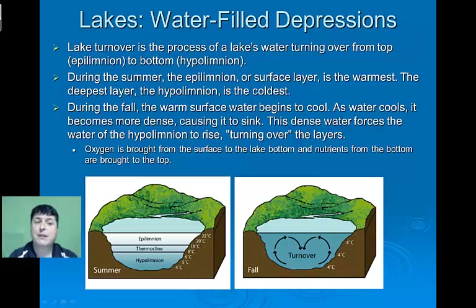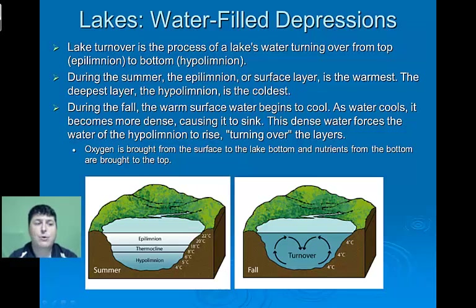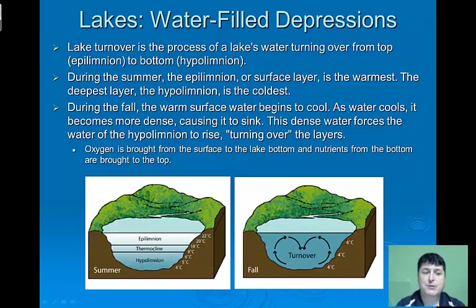Turnover is the process of the lake's water turning over from the top to the bottom. During the summer, the surface layer, or epilimnion, is the warmest, while the deepest layer, also called the hypolimnion, is the coldest. During the fall, that warm surface water begins to cool, and as water cools it becomes more dense, causing it to sink. This dense water forces the water of the hypolimnion to rise, turning it over, so that oxygen is brought from the surface to the bottom and nutrients from the bottom are brought to the top.